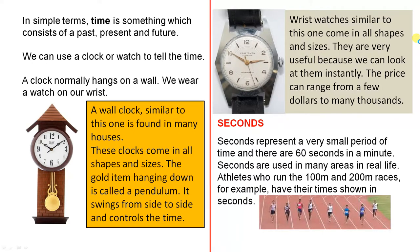We can use a clock or watch to tell the time. A clock normally hangs on a wall. We wear a watch on our wrist. A wall clock, similar to this one, is found in many houses.